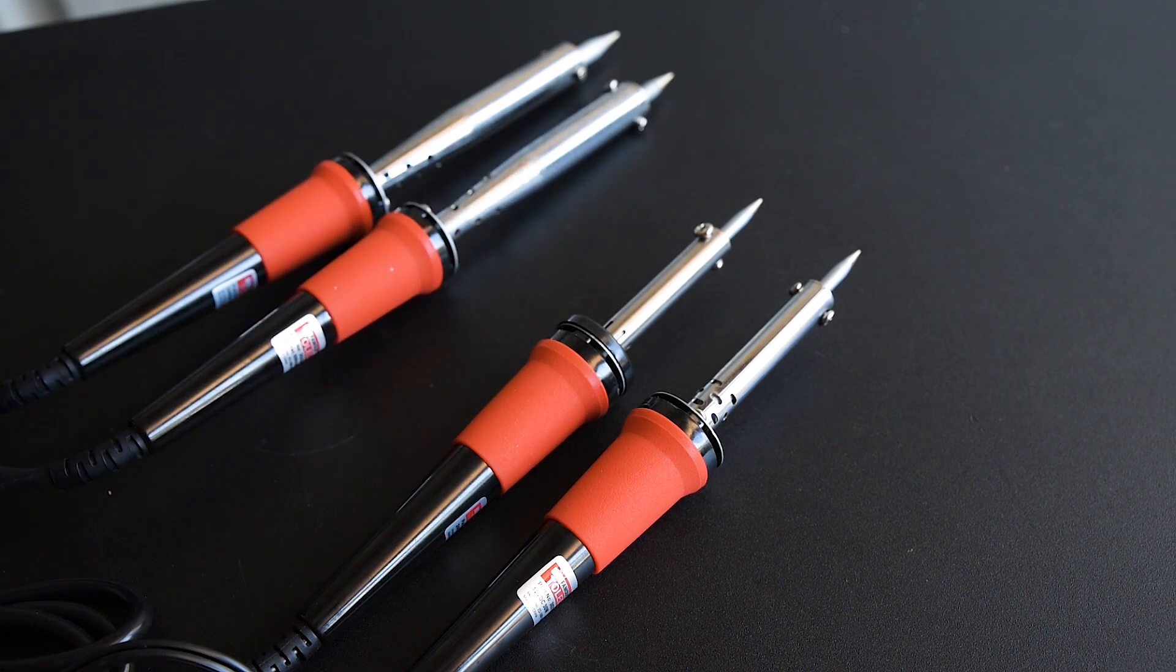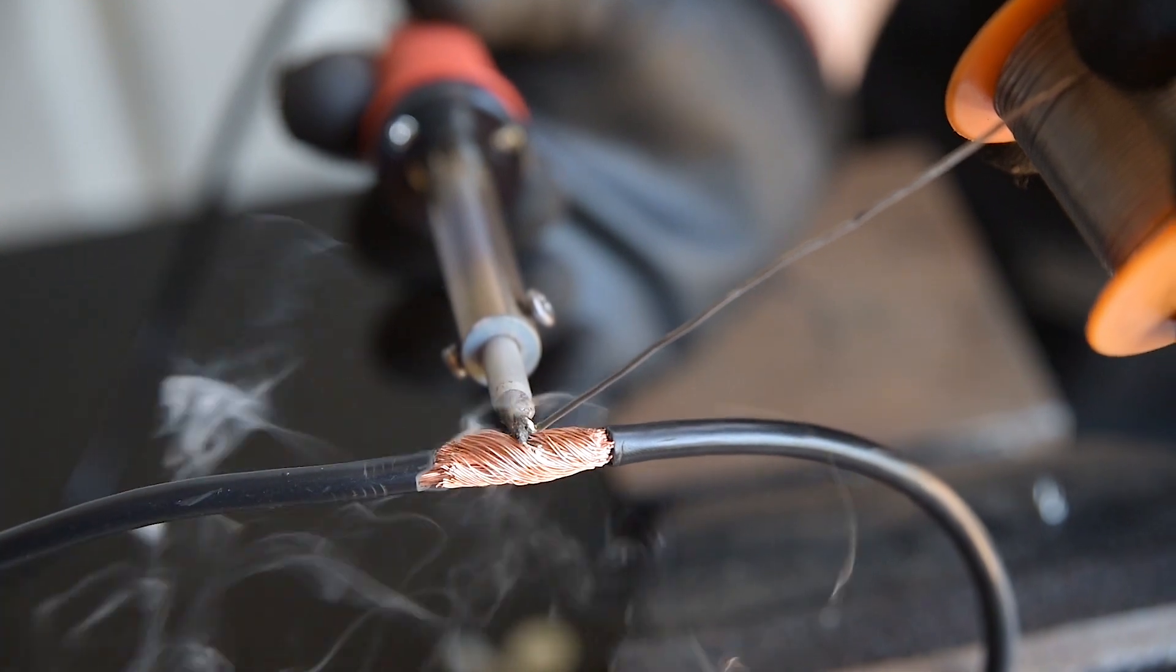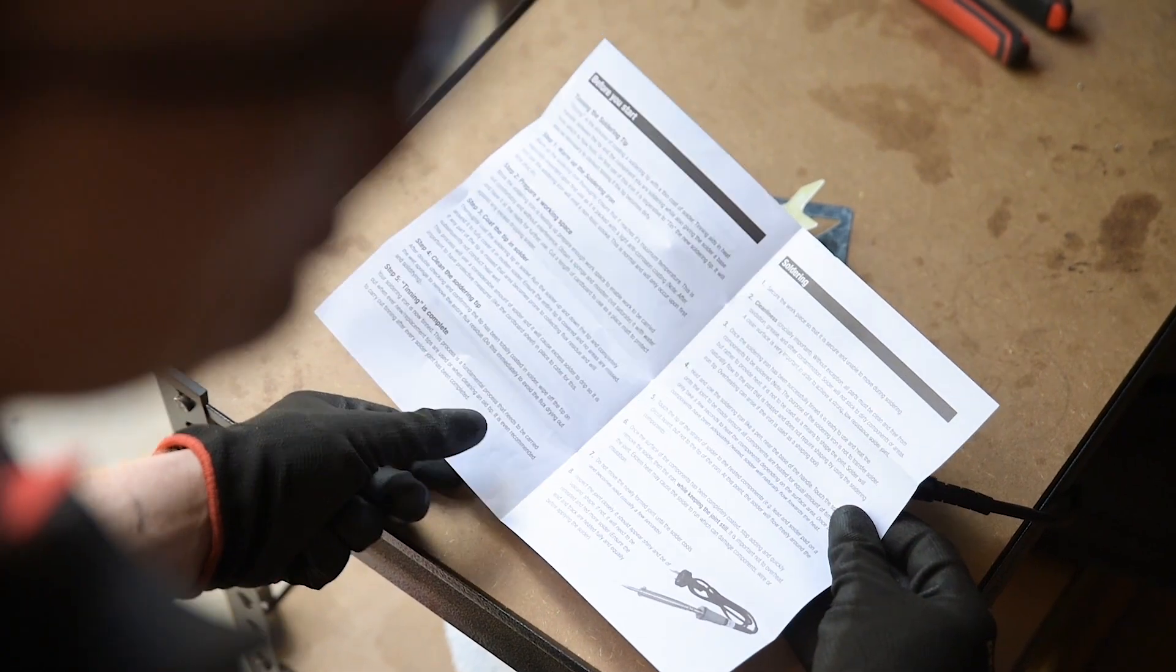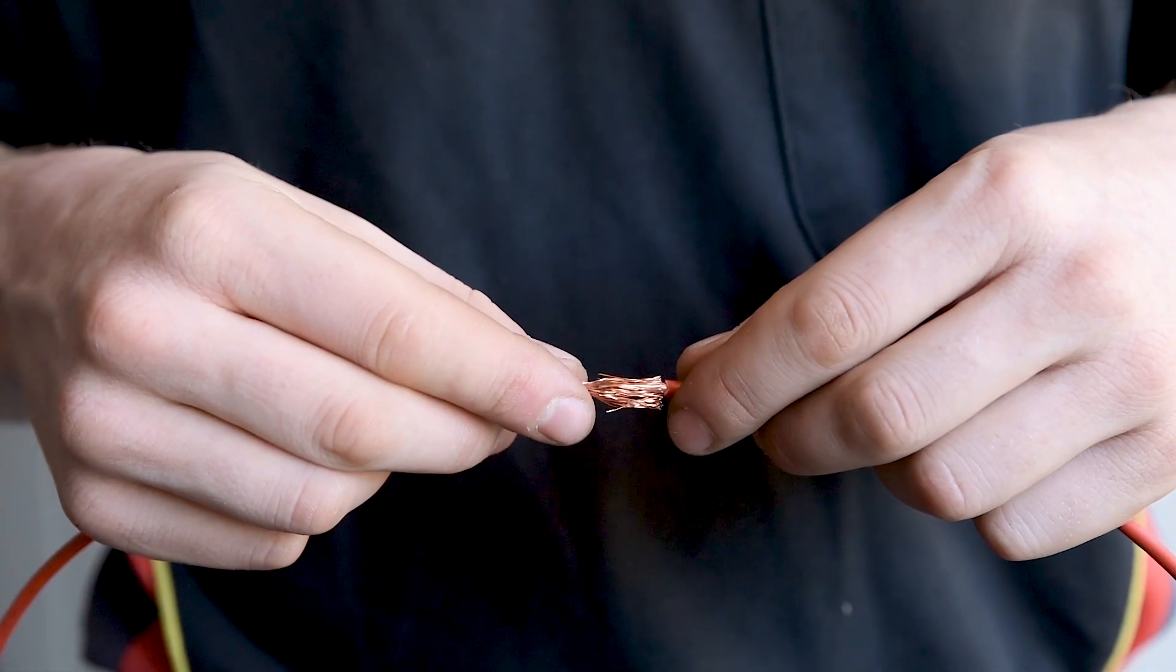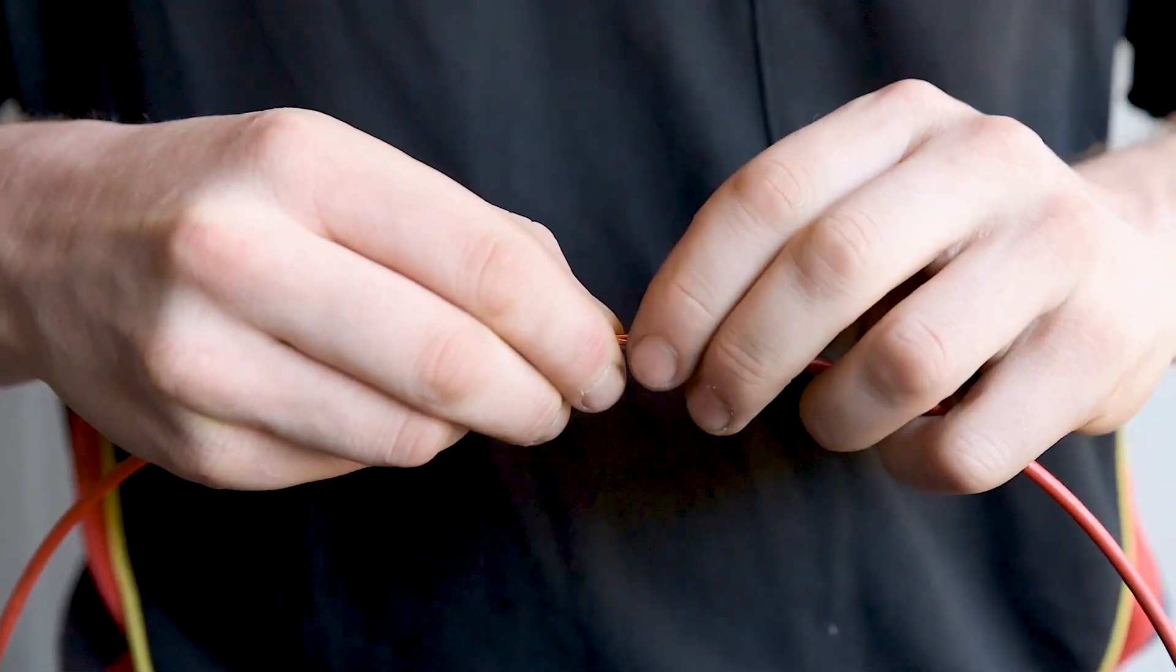Once you've chosen a suitable soldering iron for your work, it's worth putting in a little practice before tackling a project. Each soldering iron comes with a user manual including tips and tricks for soldering. Bare the ends of a piece of scrap wire and twist them together while your soldering iron heats up.